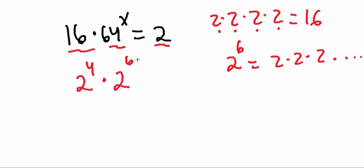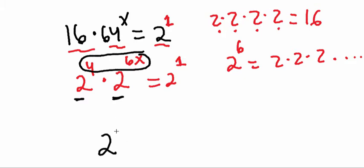So as you can see here, I'm just basically rewriting the problem. Then don't forget, you have a 1 right here. Well, now that I have the same base, I also need to remember that when you have the same base, I can add the exponents. So this is 2, and then you're going to have 4 plus 6x equals 2 to the 1.